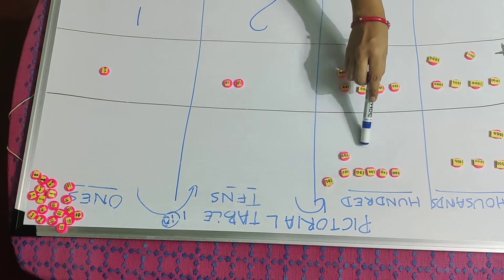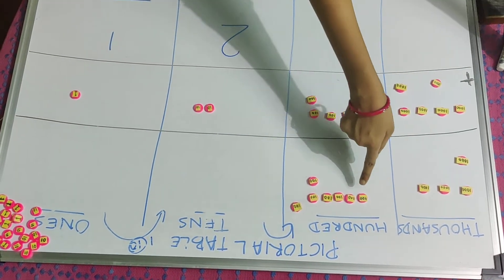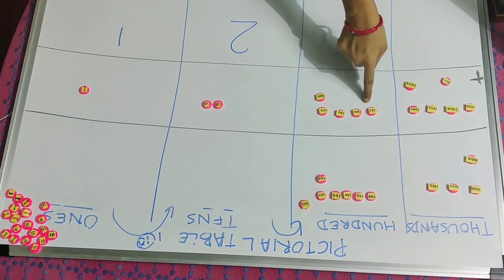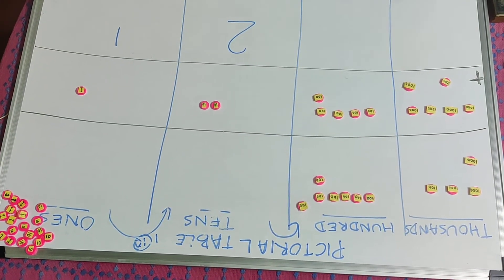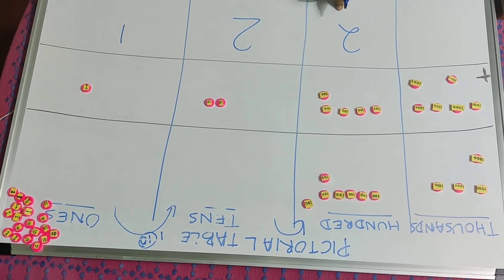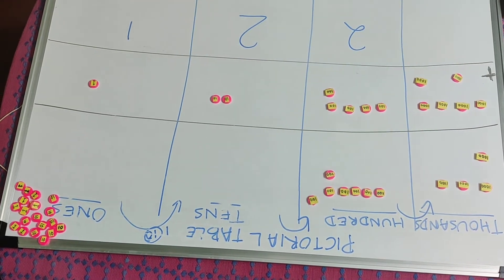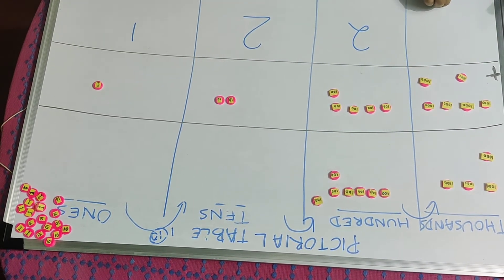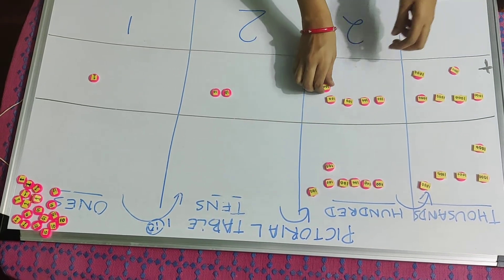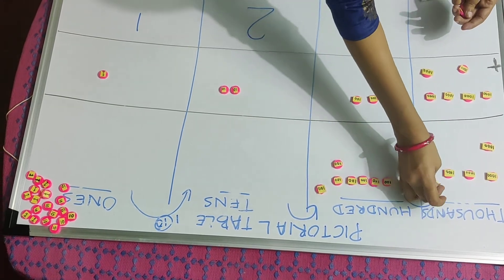Now I will solve my hundreds place. Here also I will do the same thing — I will count the numbers: one, two, three, four, five, six, seven, eight, nine, ten, eleven, twelve. Again the total sum is twelve. I will not write twelve together; I will put ten times hundred as carryover, which becomes one thousand. So I am taking ten times hundreds from here and carrying one to the thousands place.